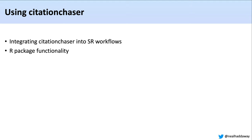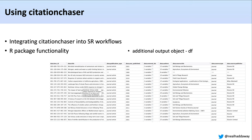There's additional functionality within the R package that might be useful for some people. The Lens.org API outputs a really rich data frame that you can access within an additional output object called DF, and that holds a lot of information about authors, as well as a whole suite of other information.